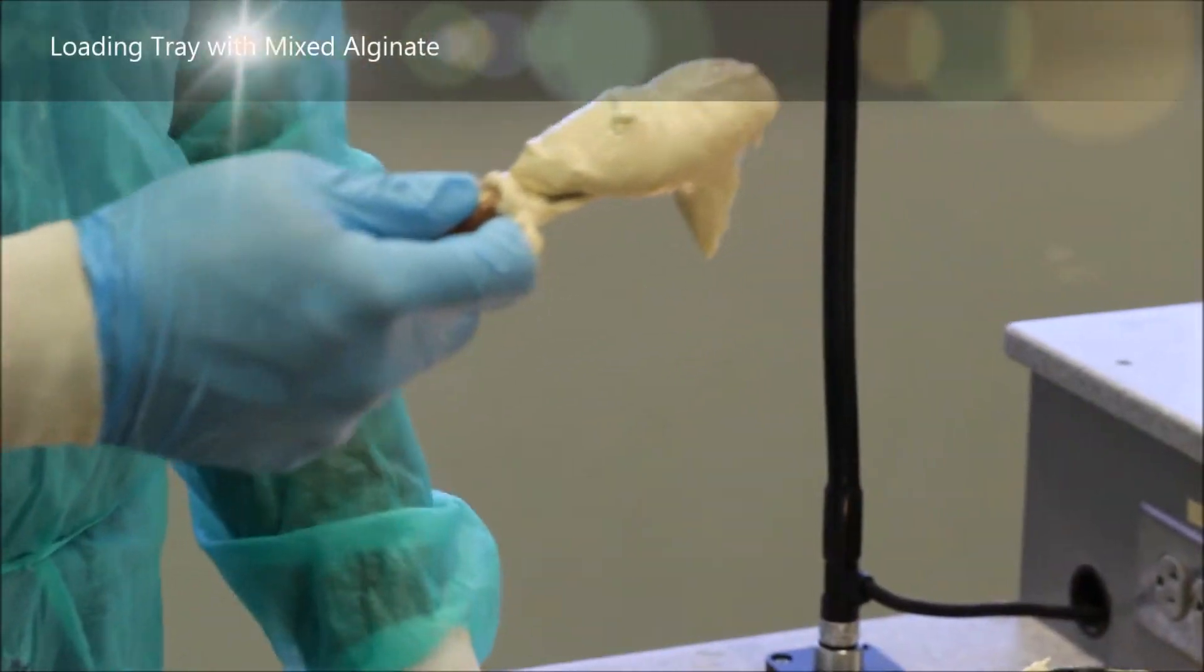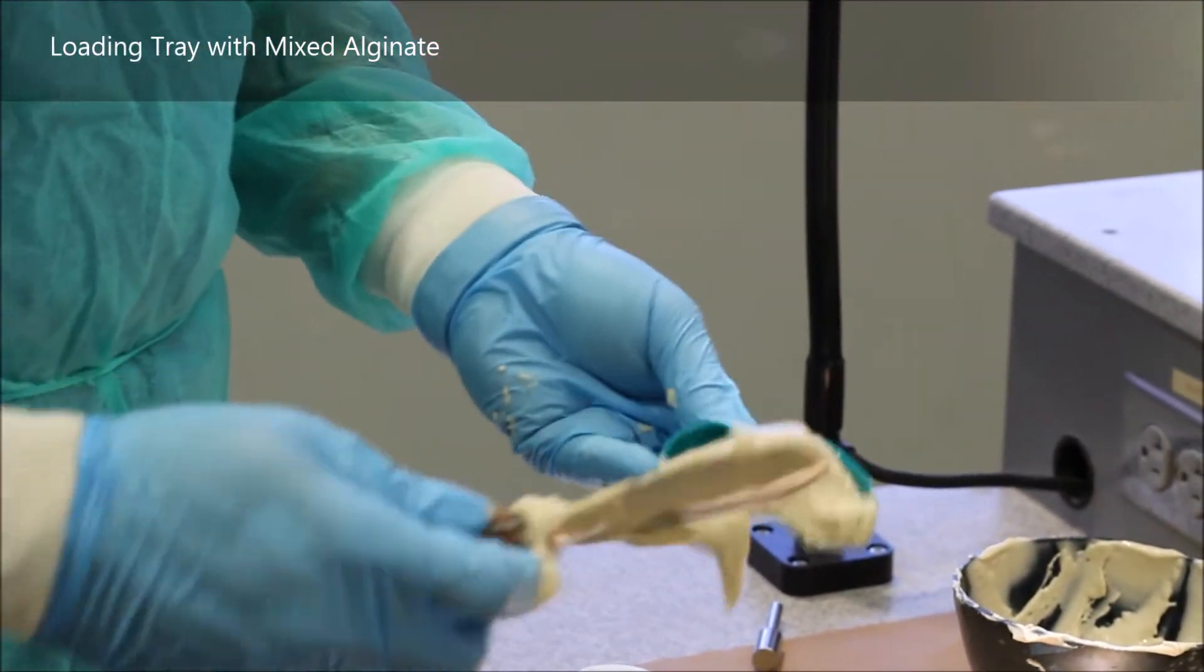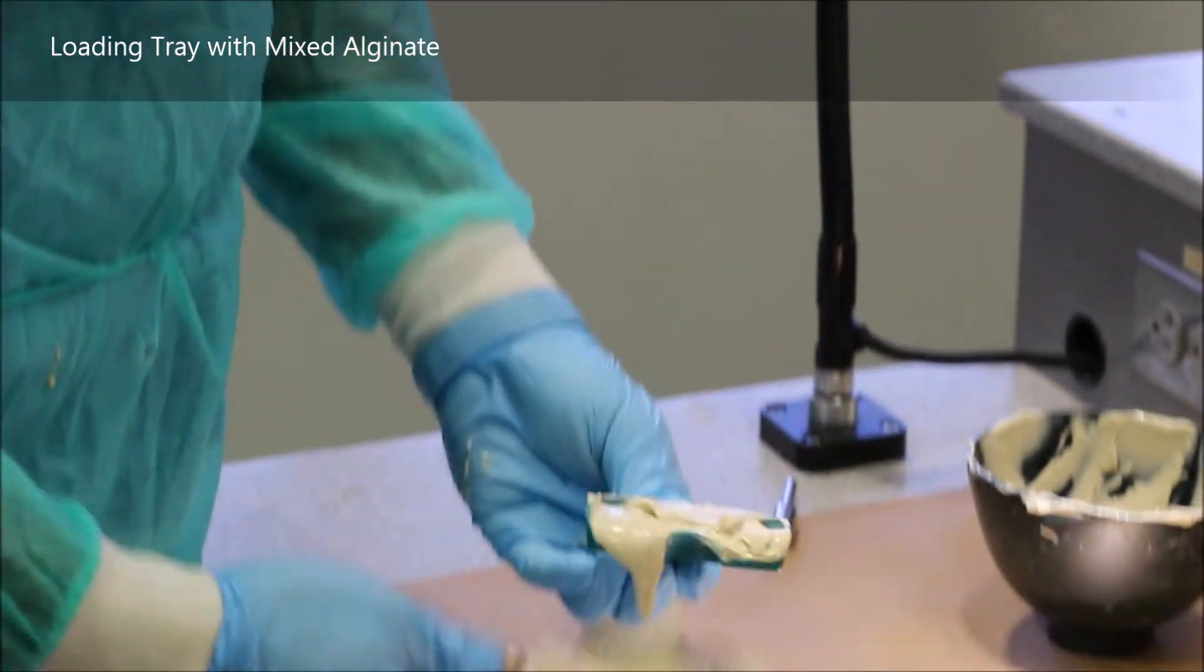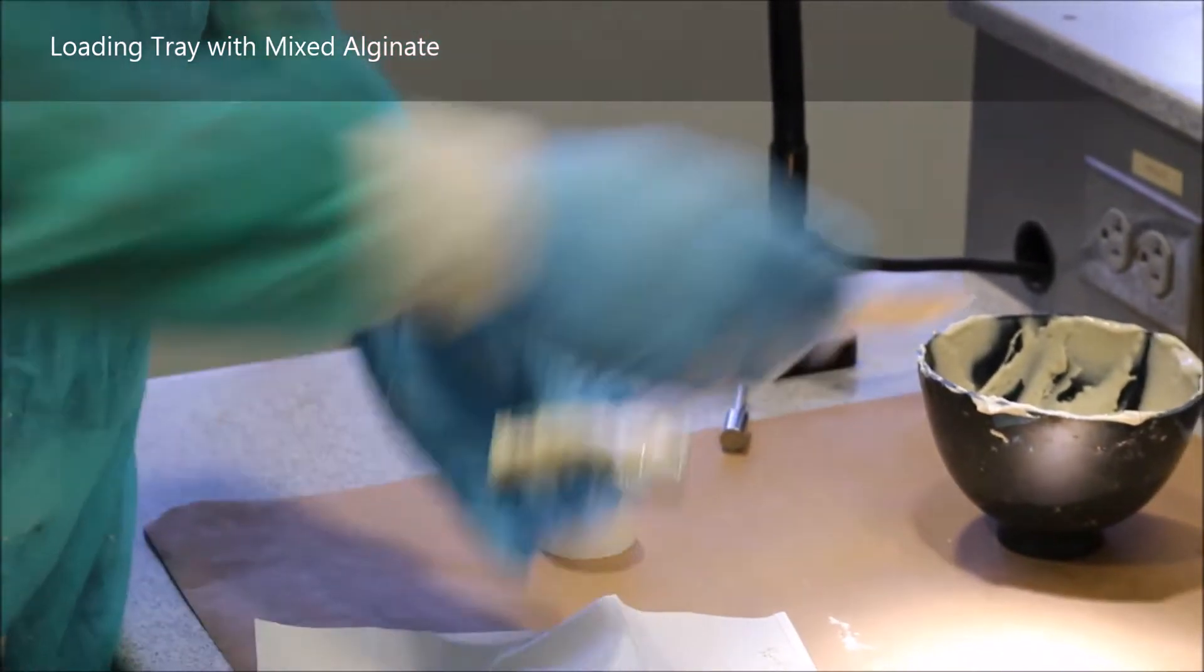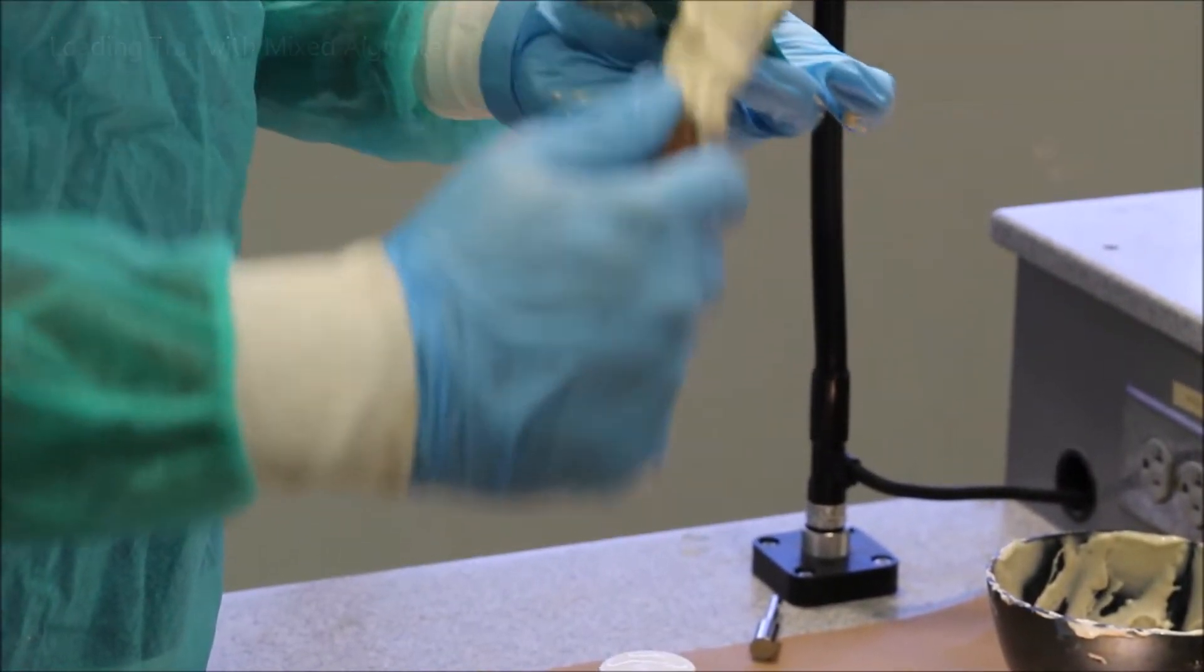Having done this sufficiently, I will now take a good amount of my impression material and load it onto the maxillary tray. You load it from the posterior and flatten it towards the anterior. I didn't get as much as I wanted, so I'm going for a second swipe.